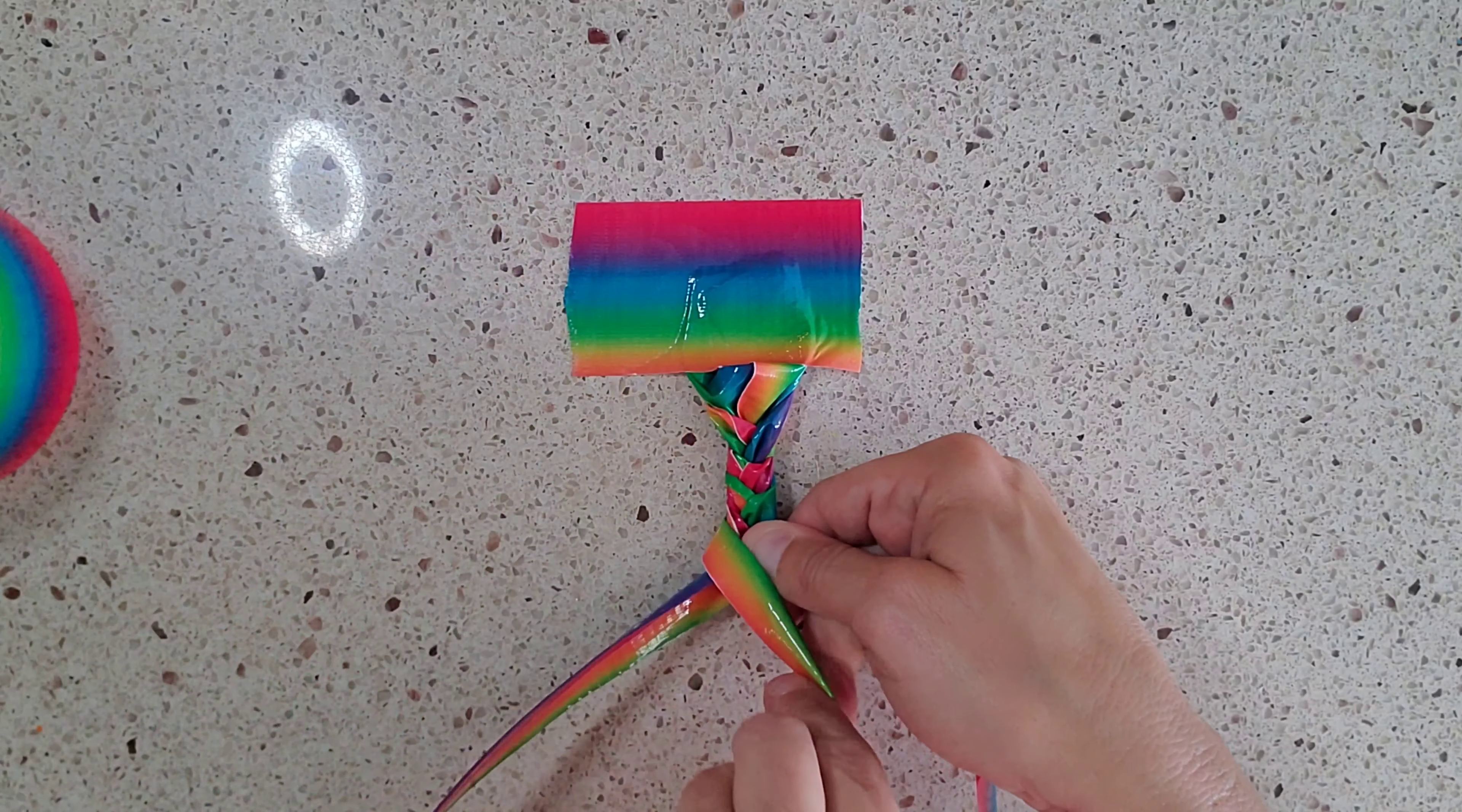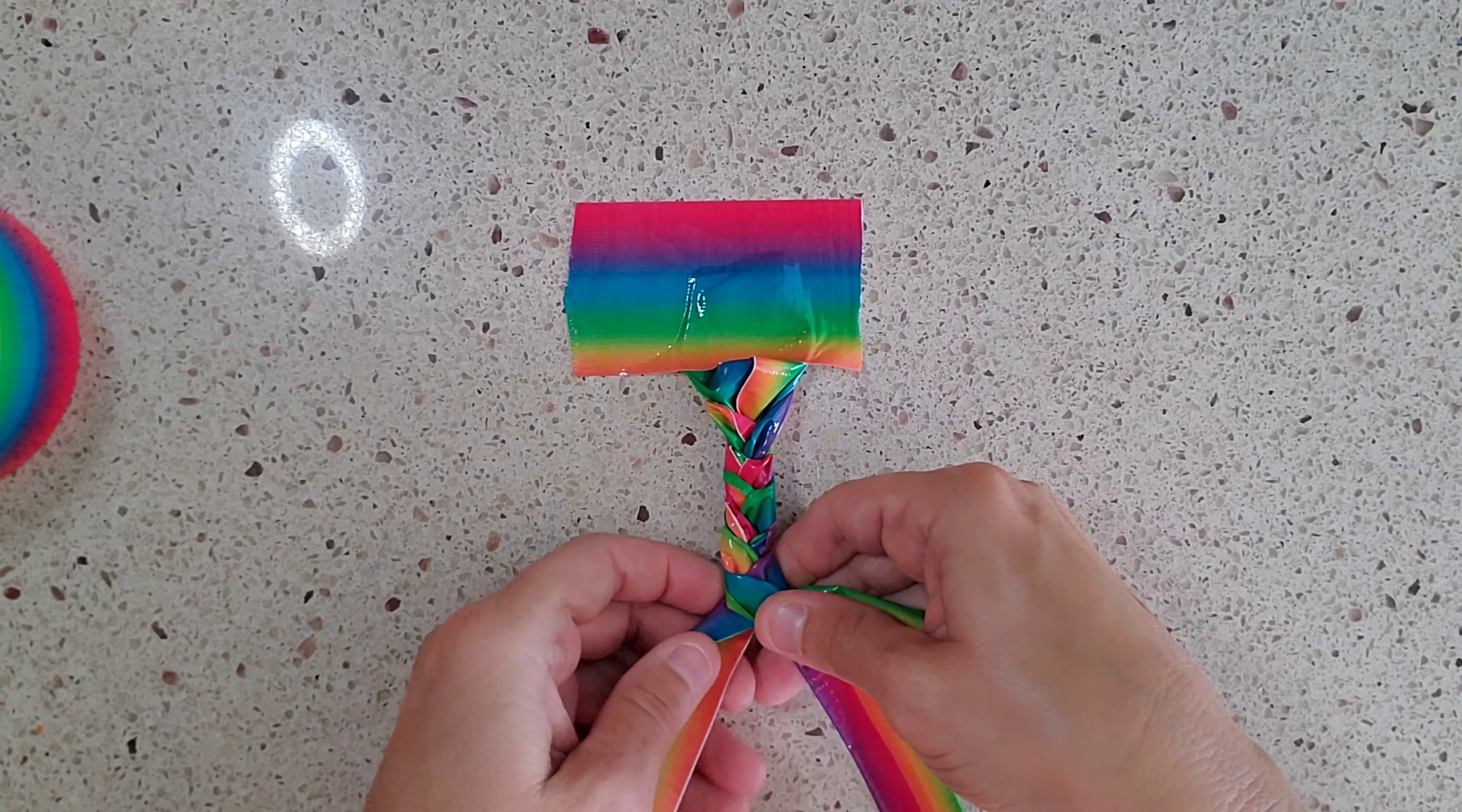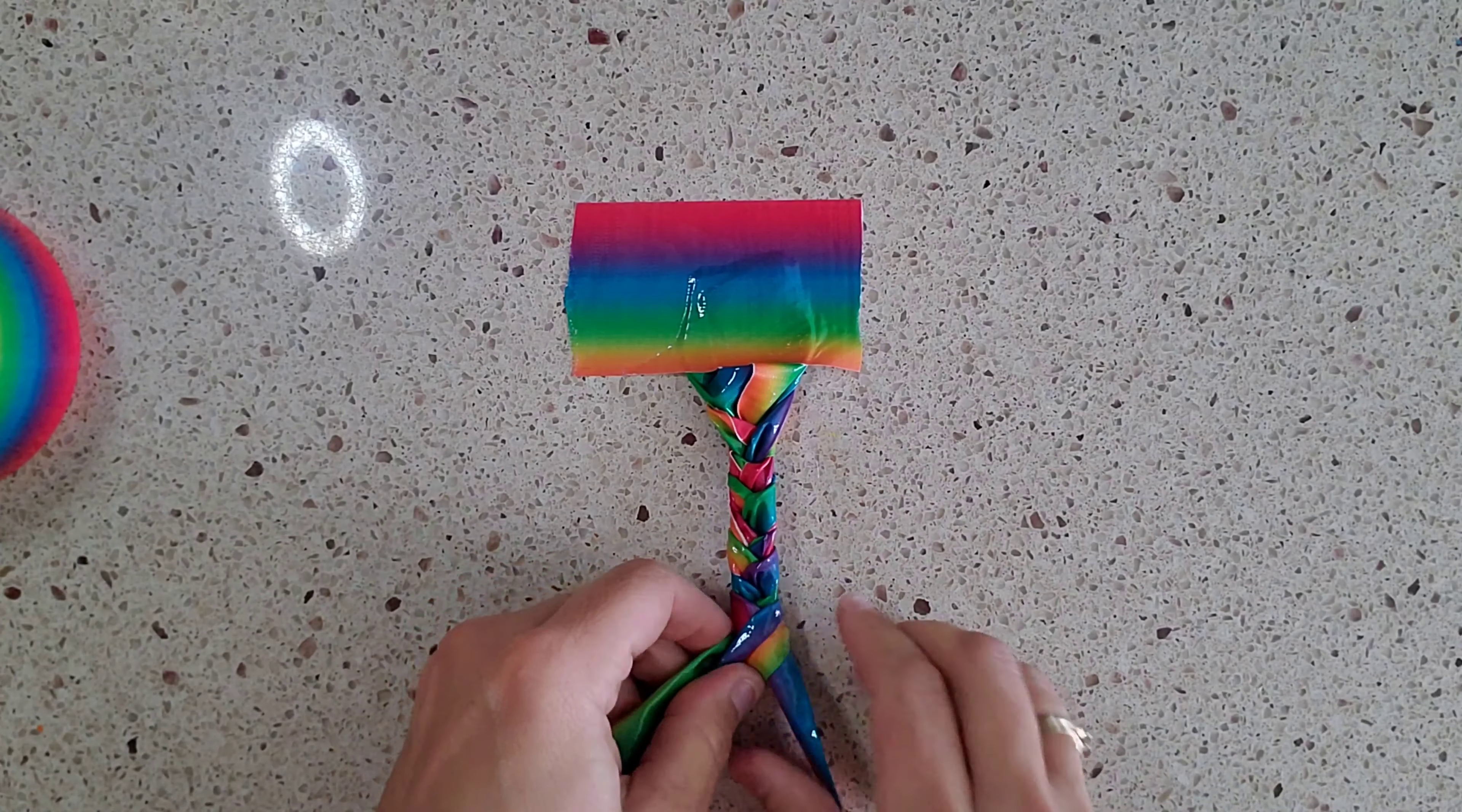So then this one goes over, then you pull a little tight and then this one over here goes over and you pull it tight and then the one on the right pulls over and then the one on the left and you just keep continuing this pattern until you are completely done with the braid.